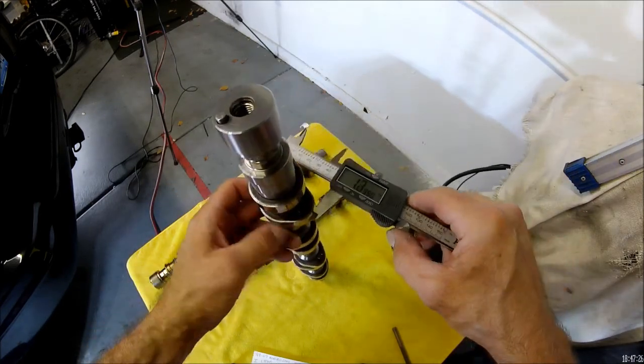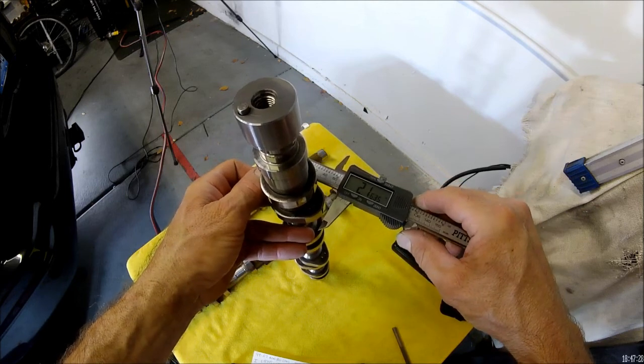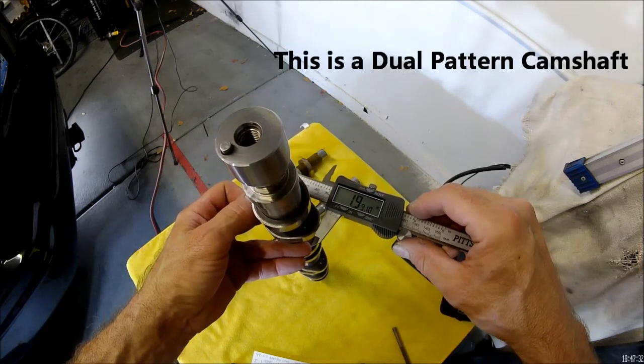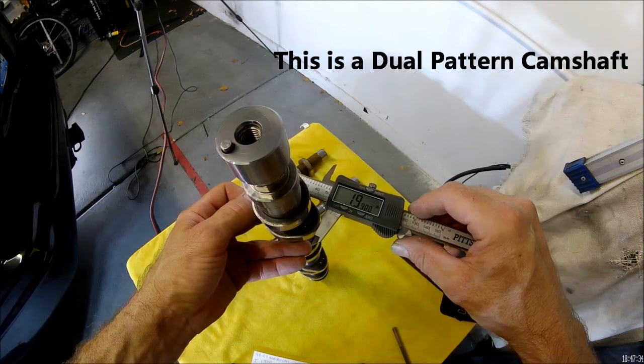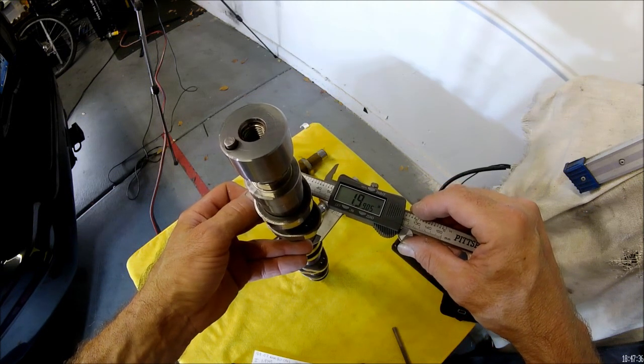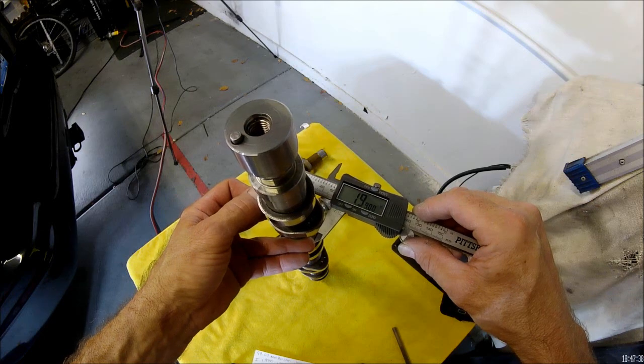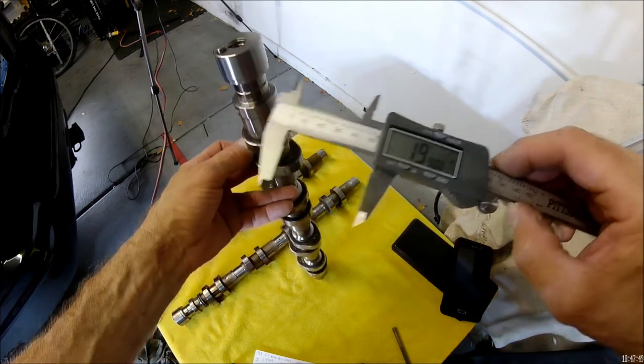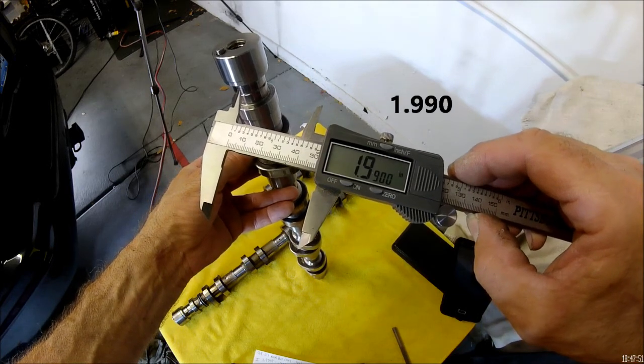All right, now we're going to do the exact same on the exhaust. Because your exhaust could have a different measurement, and that is called a dual pattern camshaft. And I'm coming up with a 1.99.